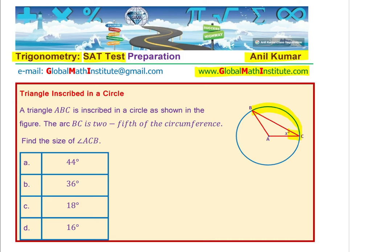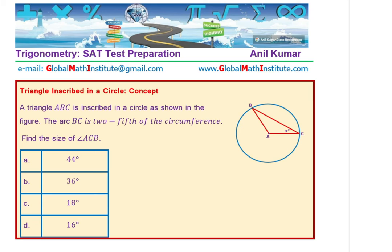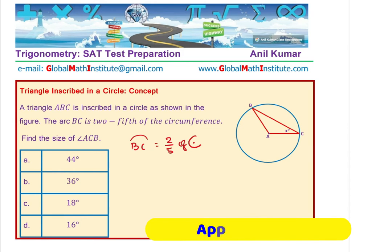Find the indicated angle. So the concept behind solving such questions is you should understand the relation between the arc and the angle subtended. Since arc BC is two-fifths of circumference, full circle, right?